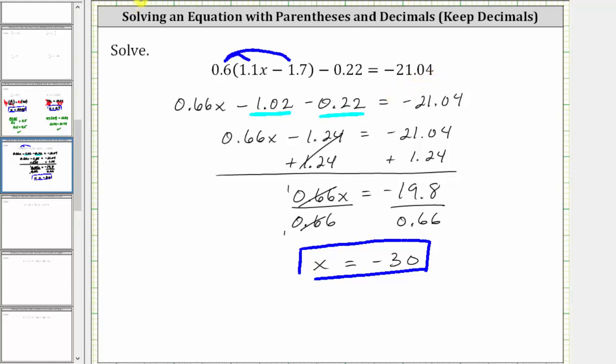And let's go ahead and check this. So to check, we substitute negative 30 for x. Performing the substitution gives us 0.6 times the quantity 1.1 times negative 30 minus 1.7 minus 0.22 equals negative 21.04.